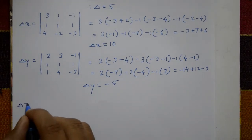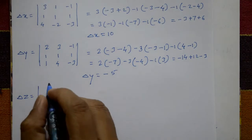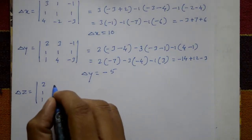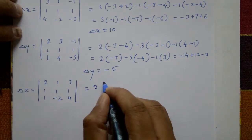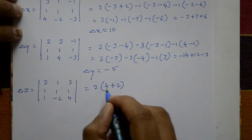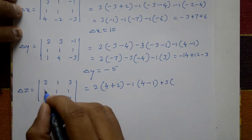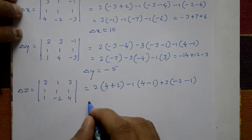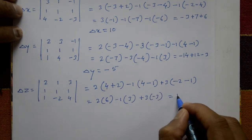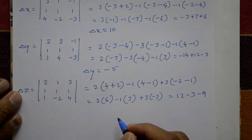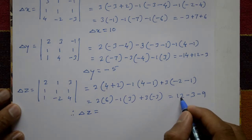Next, find Delta z. Delta z means change the third column, substituting 3, 1, 4. The first and second columns remain as they are: 2, 1, 1 and 1, 1, -2. Expanding: 2 into (4 - (-2)(1)) = 2 into 6. Minus 1 into (4 - 3) = -1 into 3. Plus 3 into (-2 - minus 2). This gives 12 - 3 - 9. Therefore, Delta z is equal to 0.